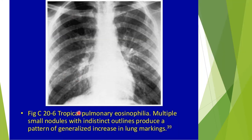A typical chest X-ray of tropical pulmonary eosinophilia shows multiple small nodules with indistinct outlines producing a pattern of generalized increase in lung markings, clearly visible in the figure.